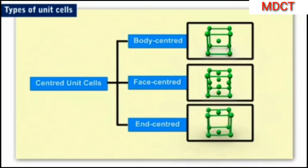An end centered unit cell has one constituent particle at the center of any two opposite faces besides the ones present at its corners.